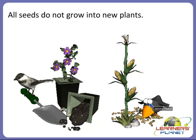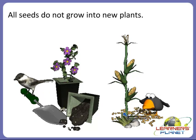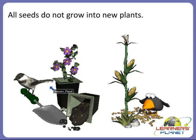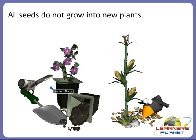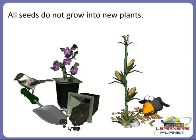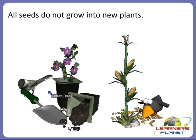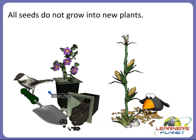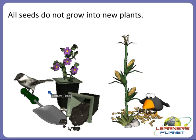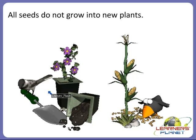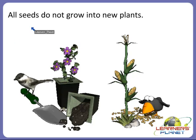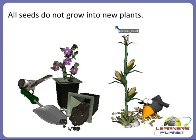This picture is showing birds. Some seeds are eaten up by birds and insects, and some get destroyed by environmental factors like rain or wind. While some seeds do not get sufficient air, water, or warmth from the sun to grow. That is why all seeds do not grow into new plants.